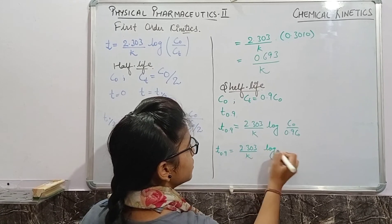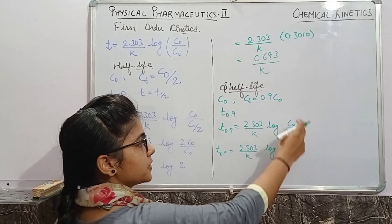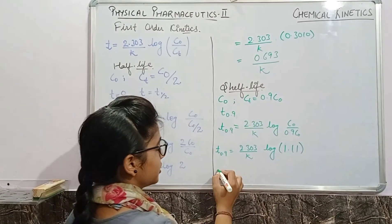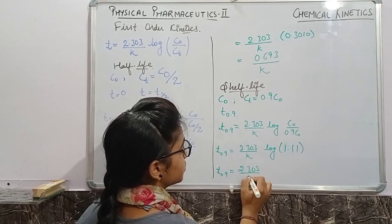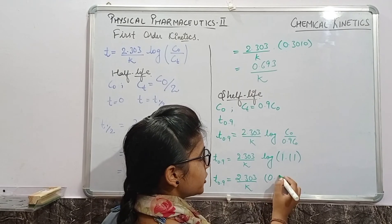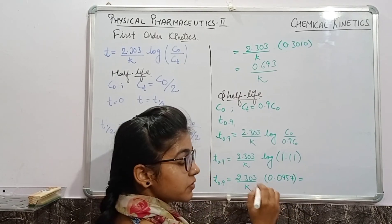It will become log 1.11. This is the value we will obtain after dividing this equation. Now t0.9 equals 2.303/k times 0.0457, and after multiplying we will get 0.105/k.